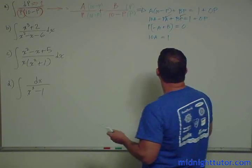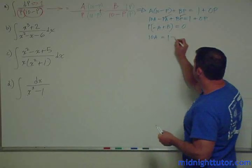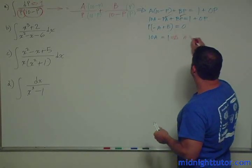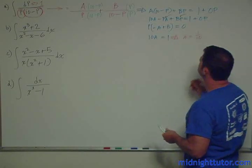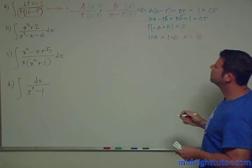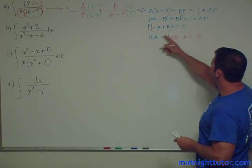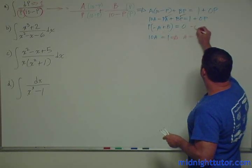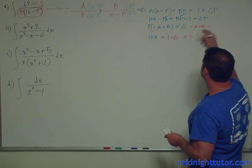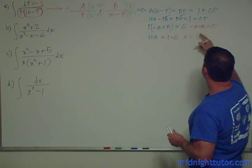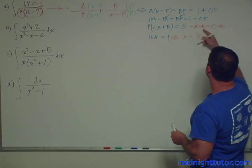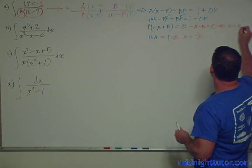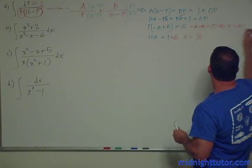So the p's we want to be 0 and the a's we want to be 1. Immediately here you can see that a is going to be 1 tenth. And here we're going to have minus a plus b equals 0, which implies that a equals b, which also equals 1 tenth.